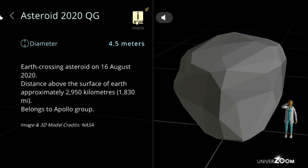Asteroid 2020 QG, diameter: 4.5 meters. Earth-crossing asteroid on the 16th of August 2020. Distance above the surface of Earth approximately 2,950 kilometers, 1,830 miles. Belongs to Apollo Group.